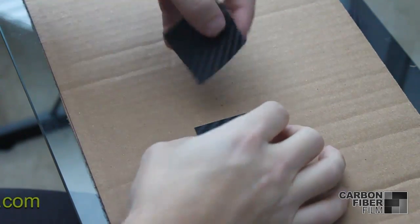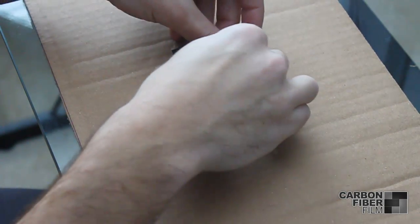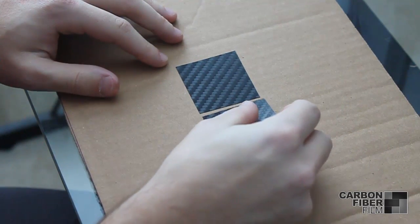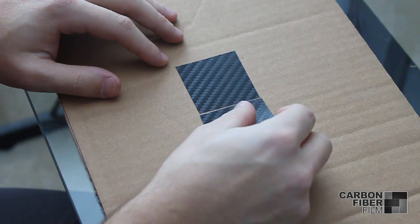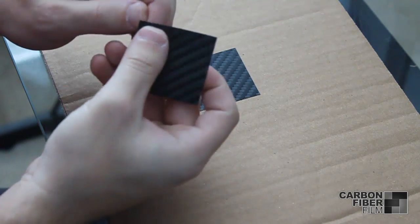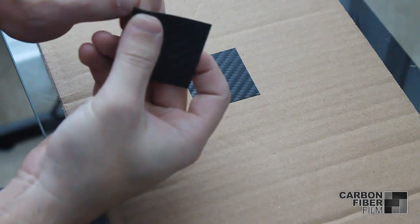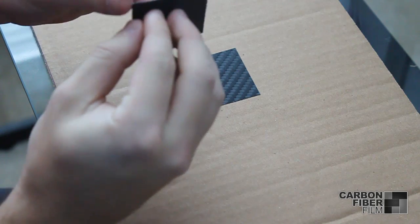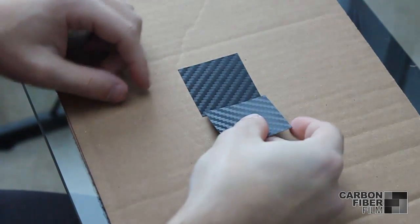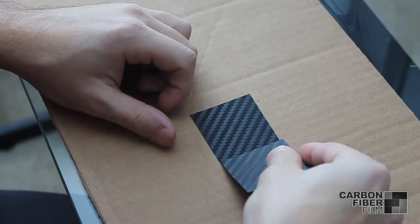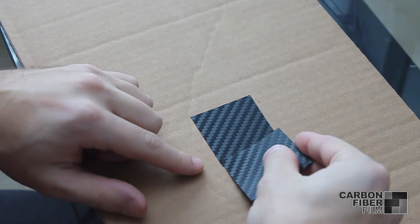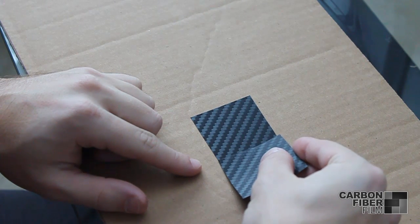Pretend that you've already installed one piece of vinyl and you want to extend it to be a little bit wider. What you would do is take your second piece and match up the pattern, but you actually want to overlay it by maybe half an inch or so.